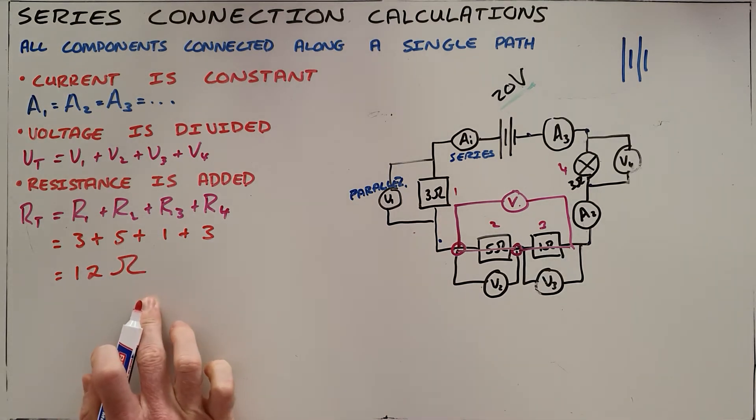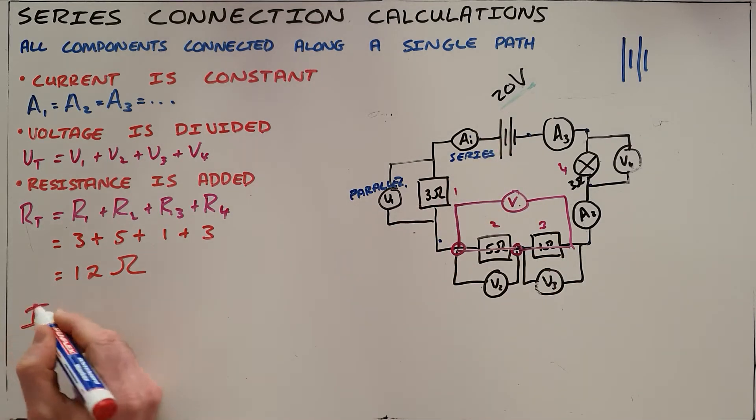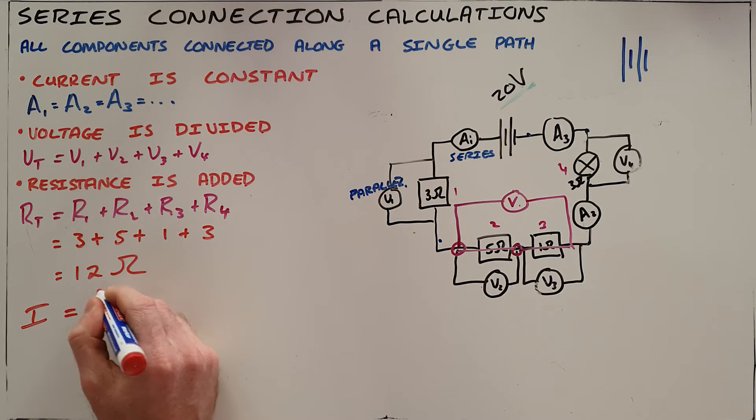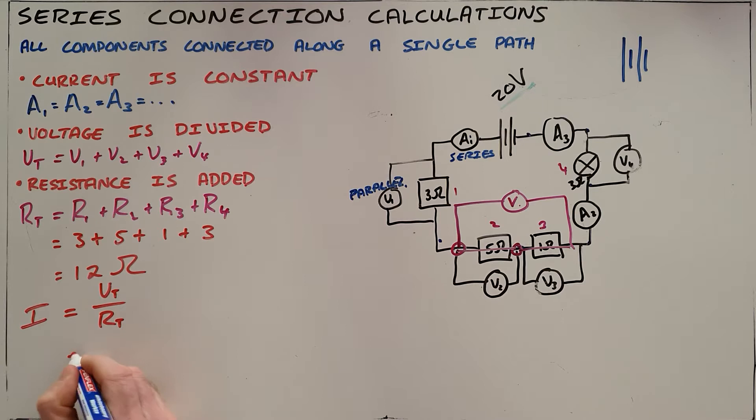Once we know what our total resistance is, and we know what our total voltage is, we can use Ohm's law to say that our current must be equal to the total voltage divided by the total resistance. In this case, we've been given a total voltage of 20 volts for that battery. The total resistance we've calculated as 12, and we can then see here that our current in this circuit must be 1.67 amps.